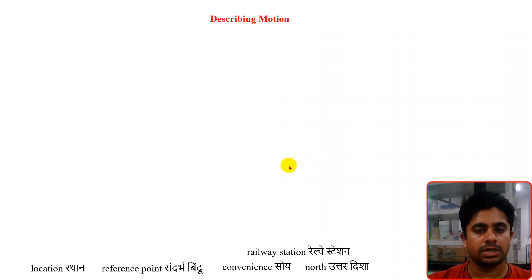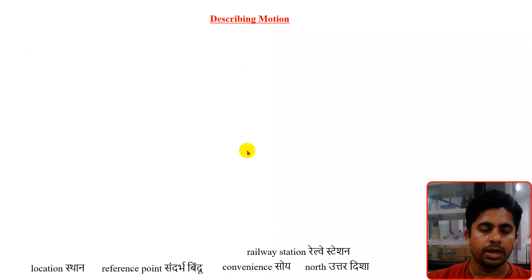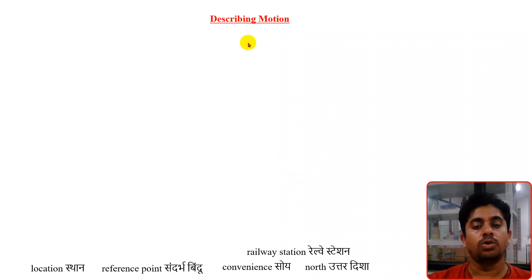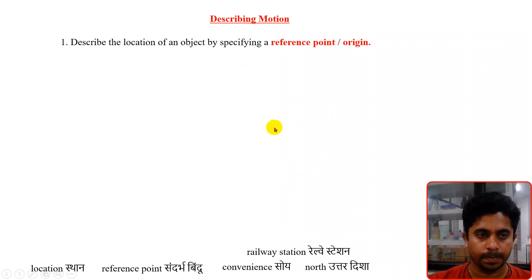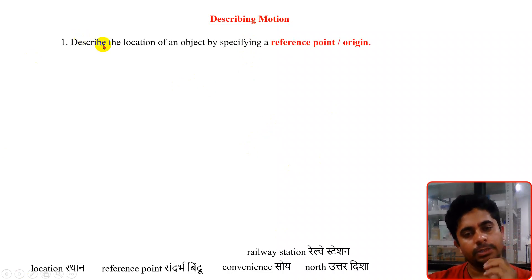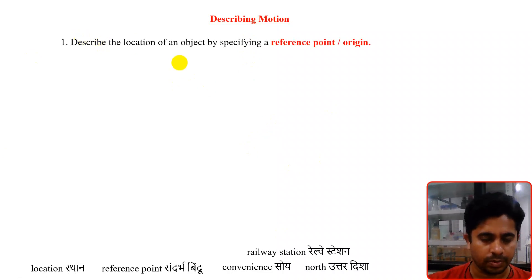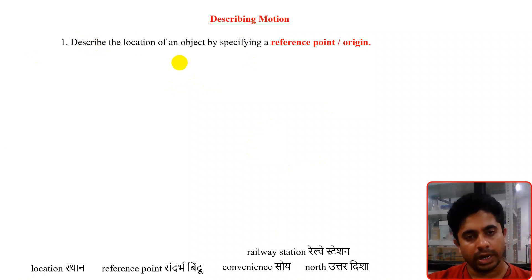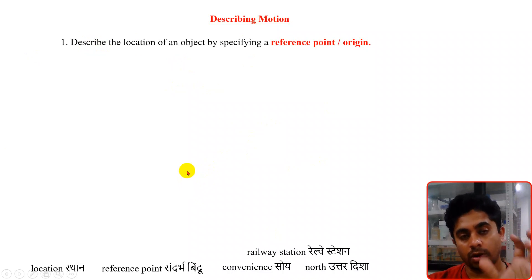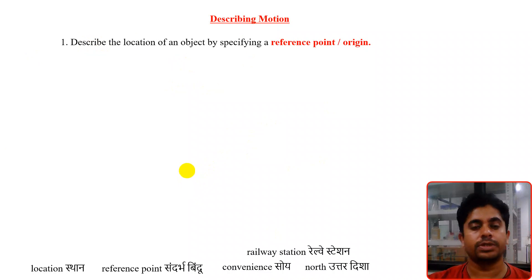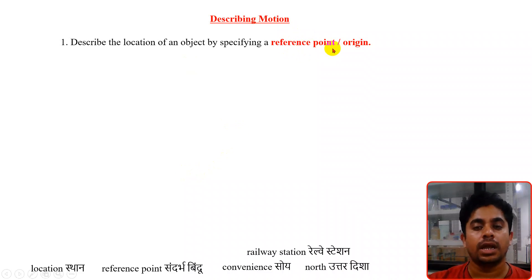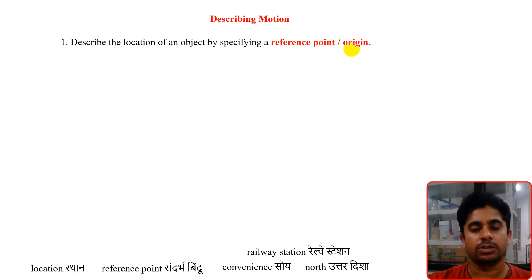In the last video we discussed different examples of motion. In this video we will discuss how to describe the motion — specifically, how to describe the location of an object by specifying a reference point or origin. The most important thing needed to locate an object is this reference point, which we will call the origin.